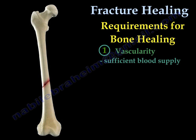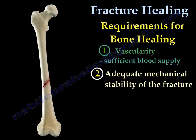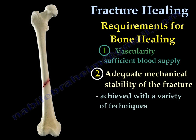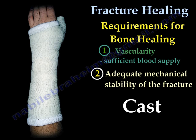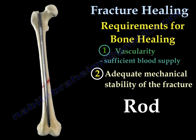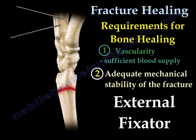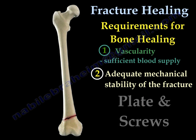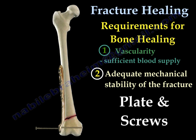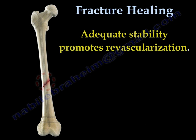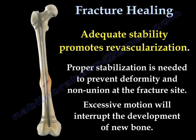After we reduce the fracture, we need the second most important thing: adequate mechanical stability of the fracture. This stability is achieved by a variety of techniques — it could be a cast, a rod, an external fixator, or a blade and screws. Adequate stability promotes revascularization of the fracture. Proper stabilization is needed to prevent deformity and non-union at the fracture site.